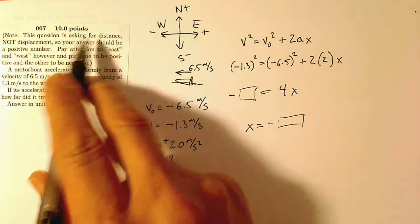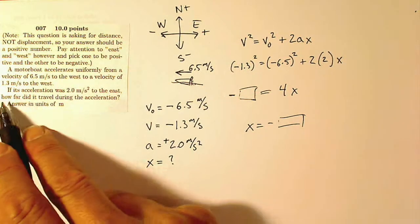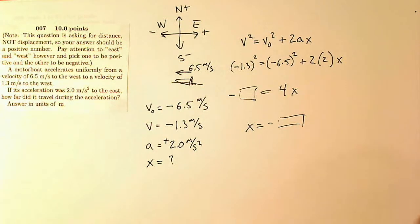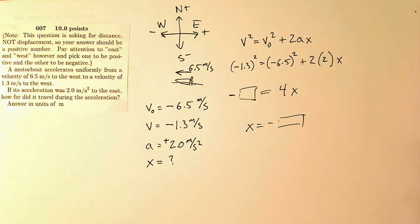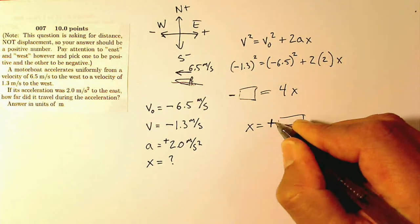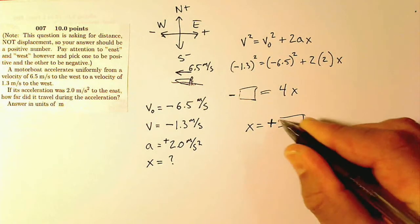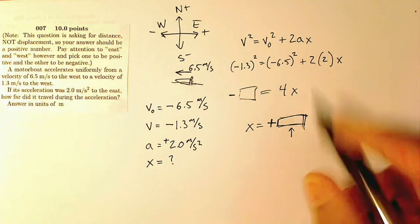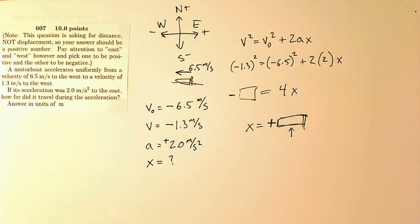But the trick here, again, is it's asking for distance. So how far did it travel? It's just asking how far. It's not asking what direction. So whatever your negative answer is, turn it into a positive answer and plug that answer into UTexas. So that's going to be a positive number is your answer when you do your math.